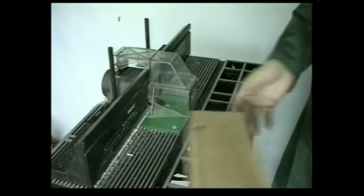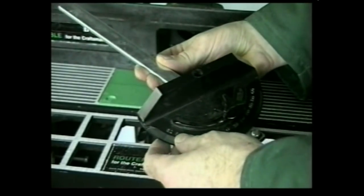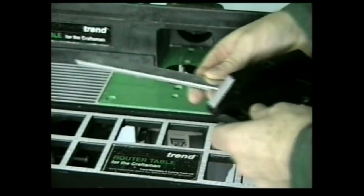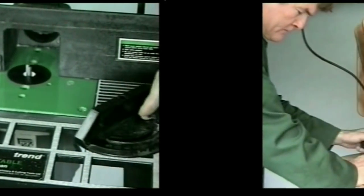Router tables often include a sliding mitre fence, which is particularly useful for cutting joints such as halvings and tenons, which I'll deal with a little later.